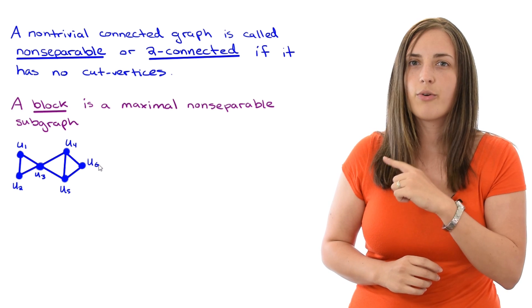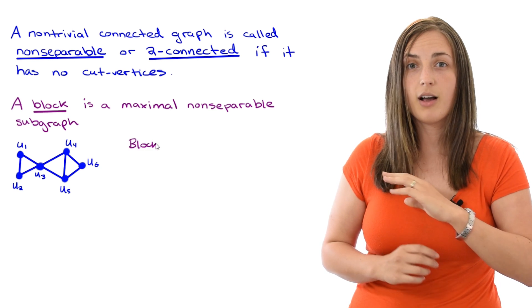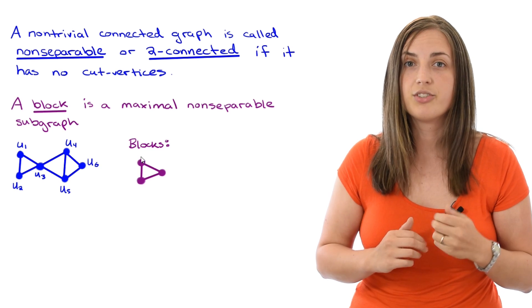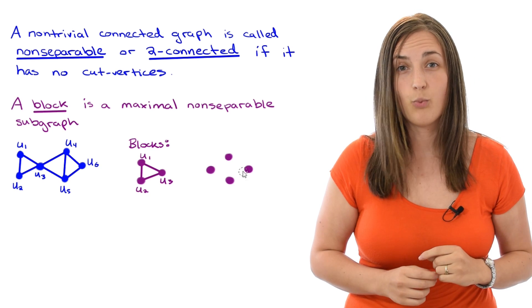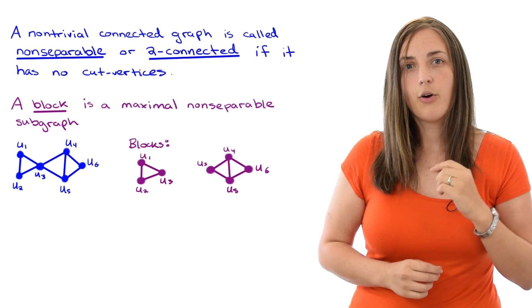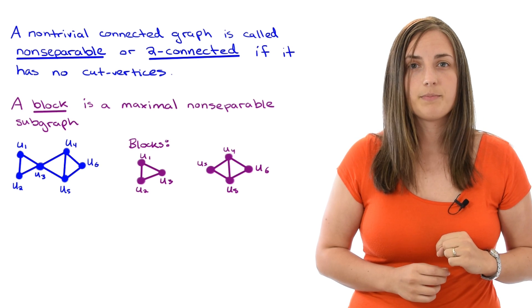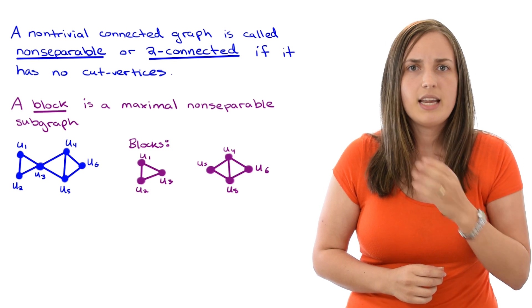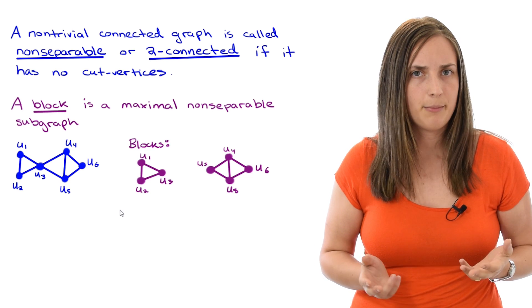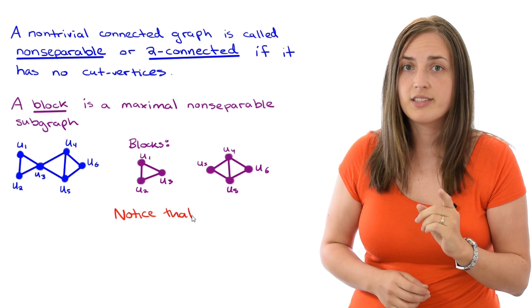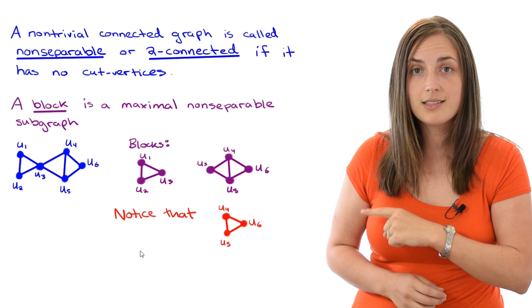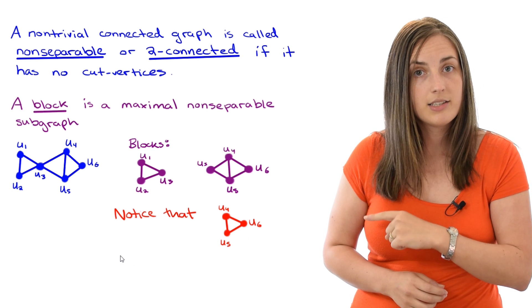So that's the graph. And now I want to write down the blocks. I'm going to write down the blocks with all the vertices labeled so that it's really clear that you can see where they're coming from. Okay, here they are. These are the blocks. Now, hopefully it's pretty clear that individually, the blocks are non-separable. However,